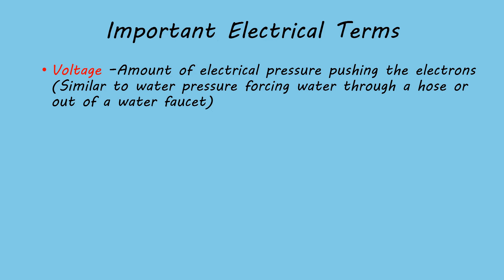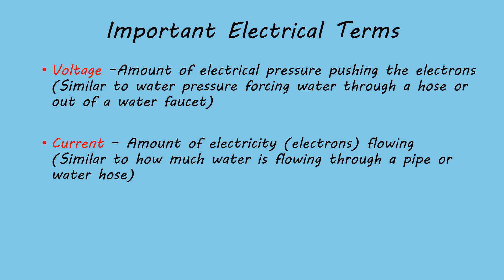Next is current. This refers to the amount of electricity or electrons flowing through a conductor. It's similar to how much water is flowing through a pipe or through a hose.